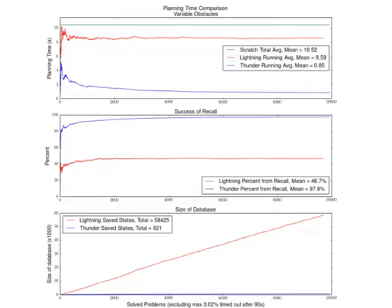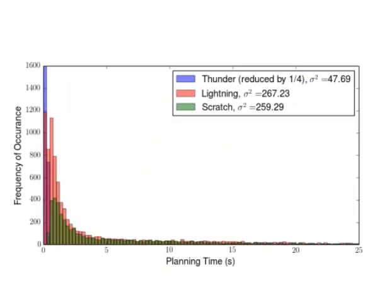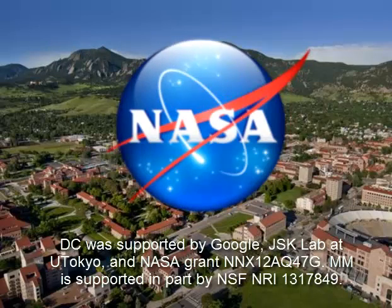In environments with variable obstacles and stability constraints, experiments show that Thunder is on average an order of magnitude faster than a path-based approach in planning from scratch as well as having a lower variance. Our framework is implemented and freely available in the Open Motion Planning Library OMPL.